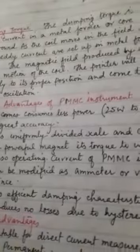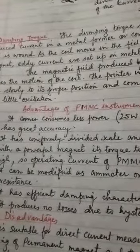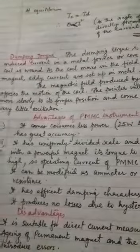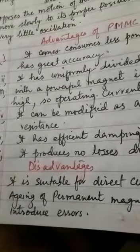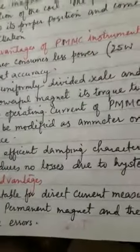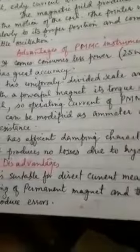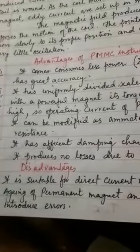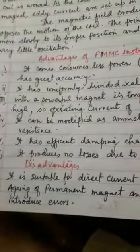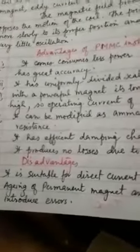The second disadvantage is aging of permanent magnets. As the permanent magnets become older and older, they lose their magnetism, and due to losing their magnetism, the instrument introduces errors in its readings.